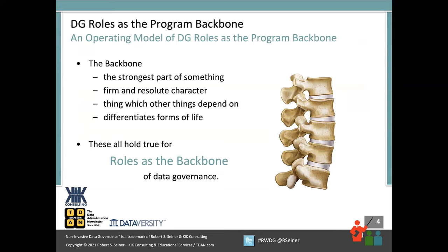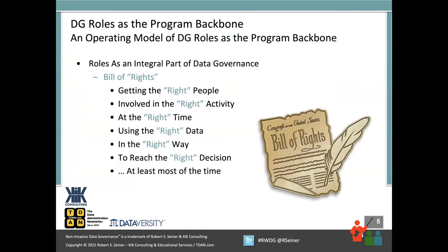With a data governance program, the roles and responsibilities are going to be involved in the processes you're governing and the data you're governing. The communications and the tools are really going to depend on which level of people and which roles you've defined for your program. So this really becomes the backbone of all the different moving components of a successful data governance program. Your data governance roles should be at least one of the strongest parts of your program — it needs to be firm, resolute, and intentional within your organization. If you look in science at the different types of forms of life, some of them have backbones and some don't. Your data governance program needs a backbone, and I believe the roles and responsibilities are what become the main thing that people see and understand when it comes to the act of governing data.